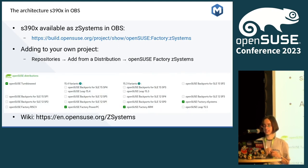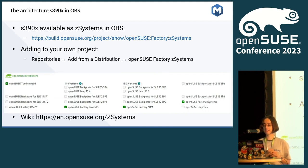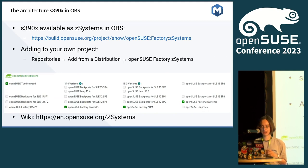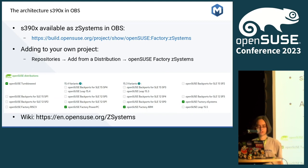We have got S390X as an architecture also in OBS. Sometimes you cannot find it directly because it is hidden behind the name 'Factory Z Systems.' I have also seen many projects that didn't enable it, and I had to create bug reports saying: you did not test and build it for S390X. Therefore, I want to give you a hint on how to enable it. You can add S390X under repositories, 'add from a distribution,' and then open through the Factory Z Systems. I have added a screenshot on the right side.